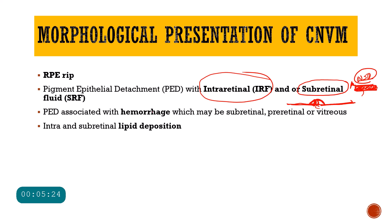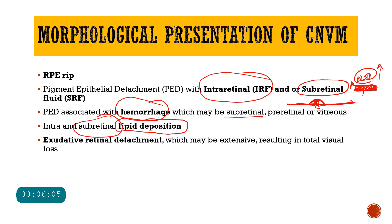These vessels can also bleed, developing hemorrhage. This hemorrhage can be subretinal, intraretinal, pre-retinal, and sometimes they can also bleed into the vitreous humor. Apart from bleeding, vessels can also cause exudation, and whenever there is exudation there will be lipid deposition as well — either intraretinal or subretinal, in between the neurosensory retina and the retinal pigment epithelium. This lipid deposition, hemorrhage, and fluid can sometimes be so extensive that the neurosensory retina gets separated from the retinal pigment epithelium over a large distance, which is called exudative retinal detachment.